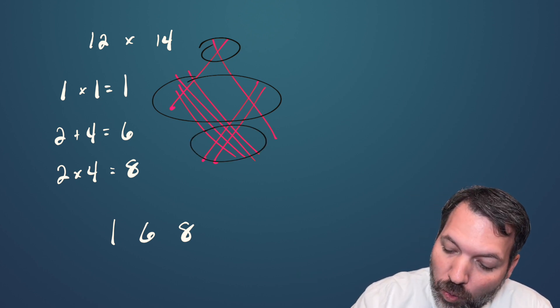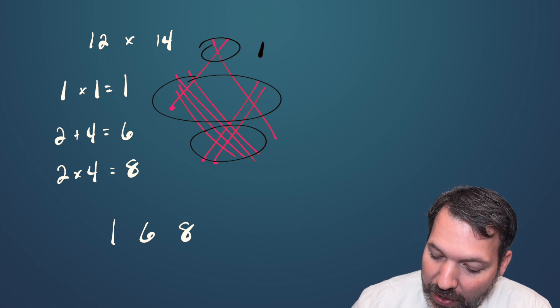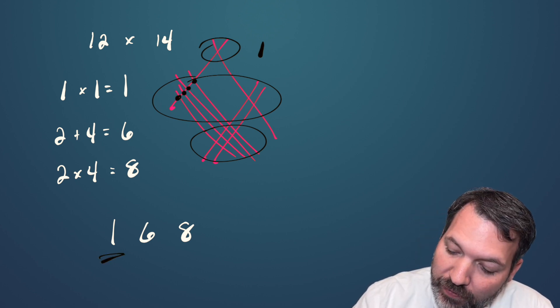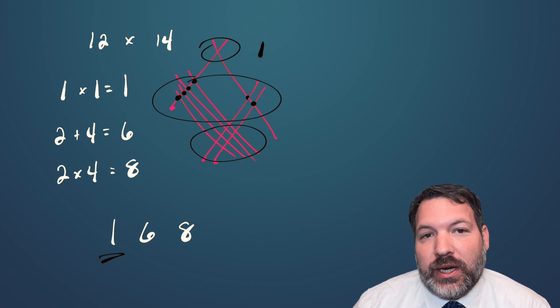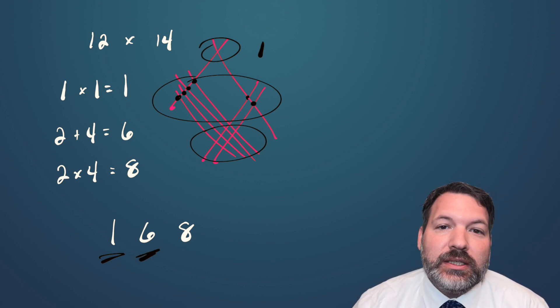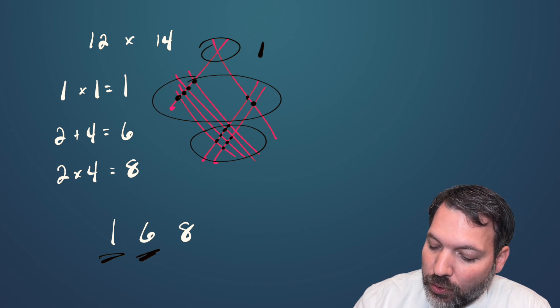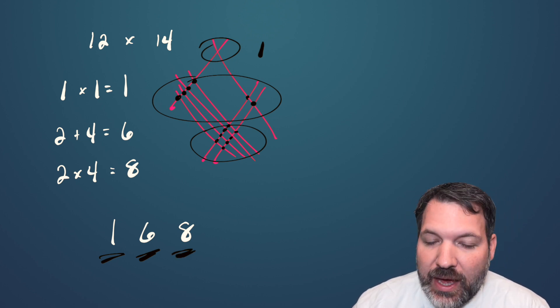You can see there is just one intersection here at the top, and that is the one of the 168 product. You can see there are one, two, three, four, five, six intersections in the middle, and that's the six of our product. Down here where the two lines and the four lines cross, we have eight intersections, and that's the eight of our product.